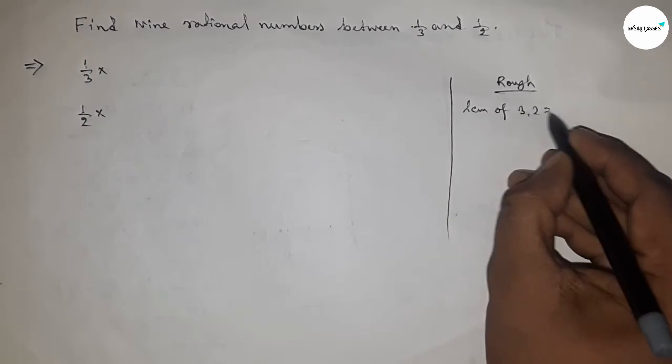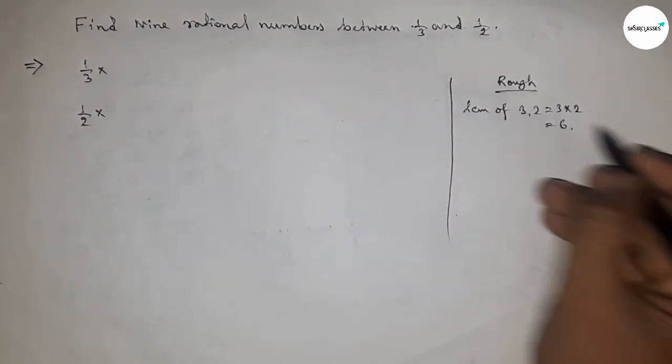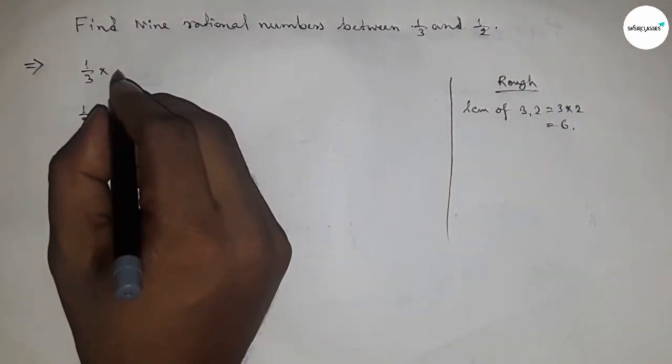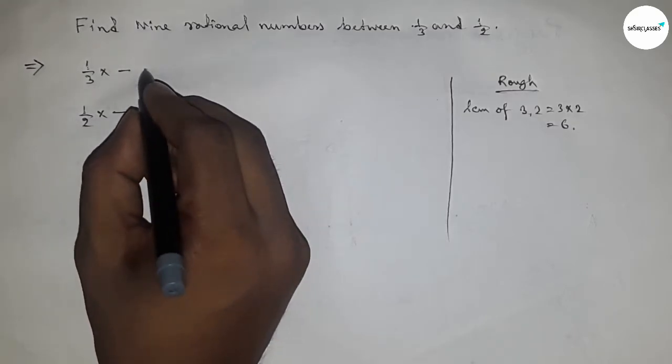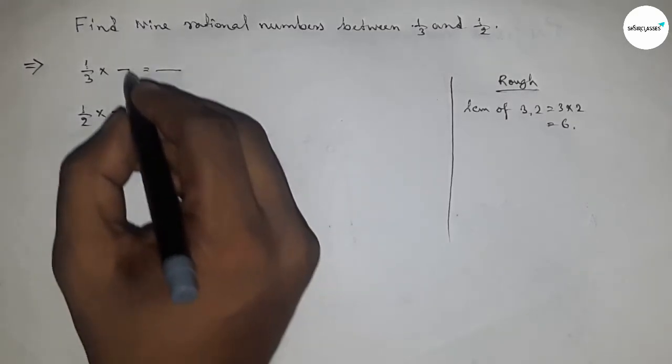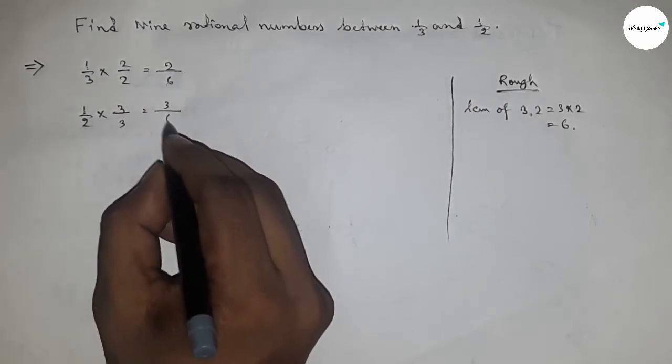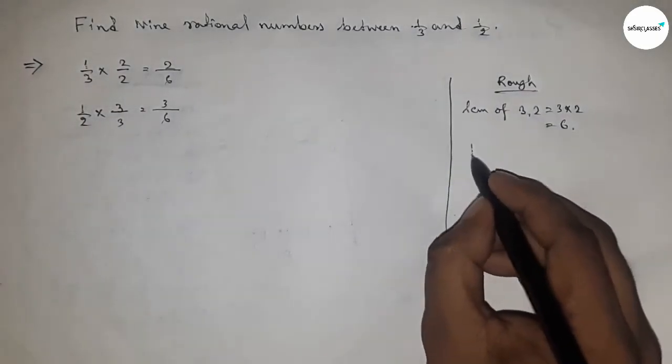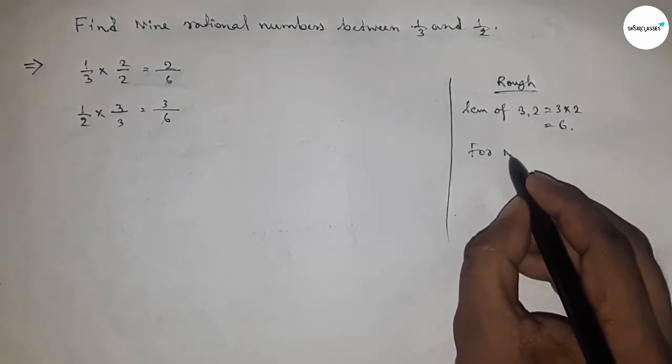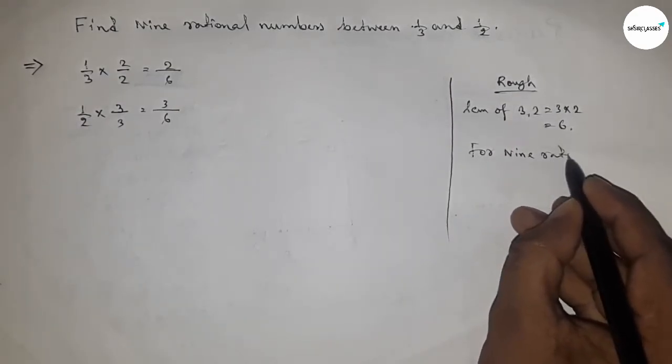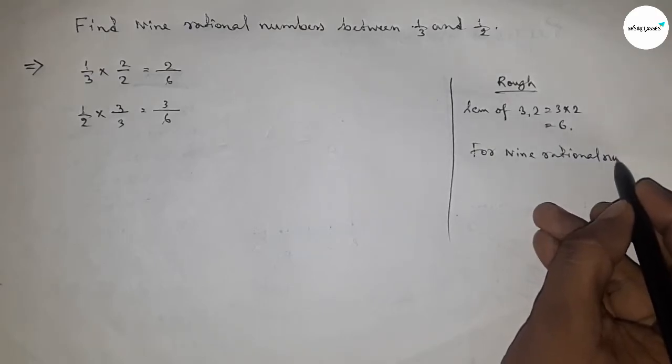find LCM of 2 and 3, and the LCM of 2 and 3 equals 6. So what should be multiplying here to get the LCM denominator of both 6. If here multiplying 2 and 3, so this is 2/6 and this is 3/6. Now for nine rational numbers, we have to multiply